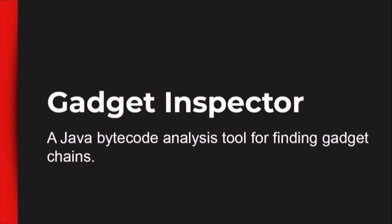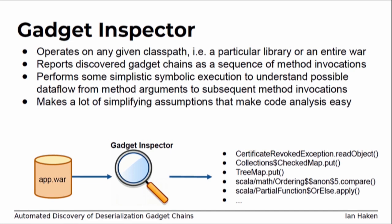I put together a tool called Gadget Inspector — a Java bytecode analysis tool for finding gadget chains. It operates on a class path: you specify either some jars and their dependencies or an entire WAR, basically your entire application. It reports discovered gadget chains — a sequence of method invocations where one invokes the next — starting at some known entry point and getting to some kind of dangerous behavior. It does simplistic symbolic execution to figure out when attacker-controlled arguments can get passed in to a method. And because of the context we're working in, this tool can make a lot of simplifying assumptions that makes this pretty easy to do.